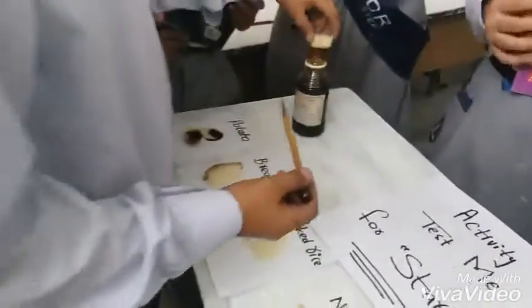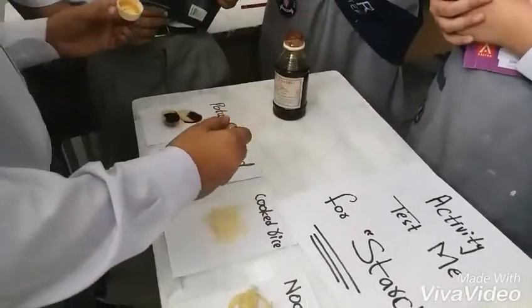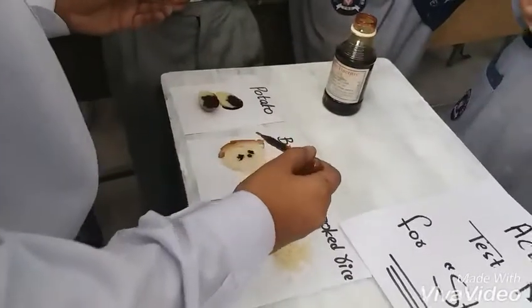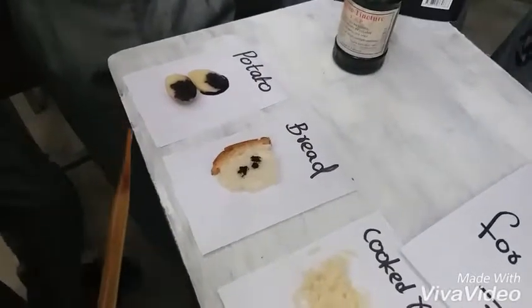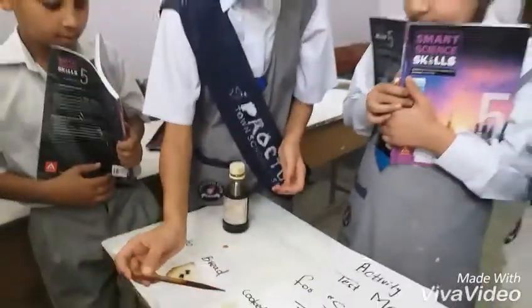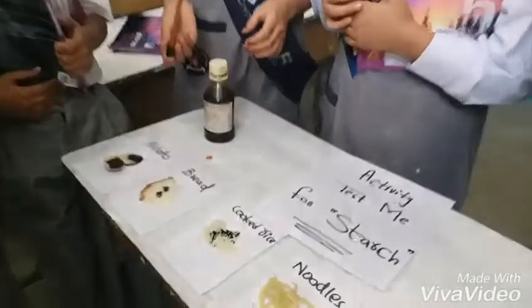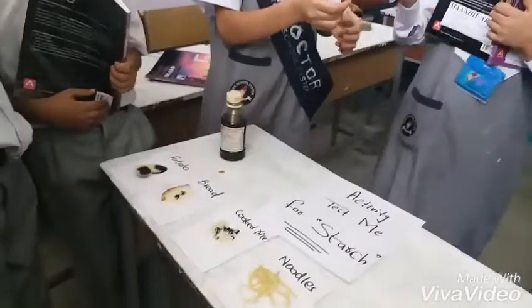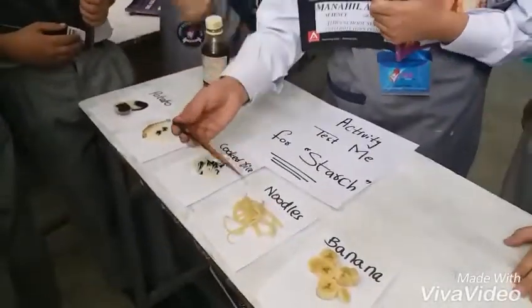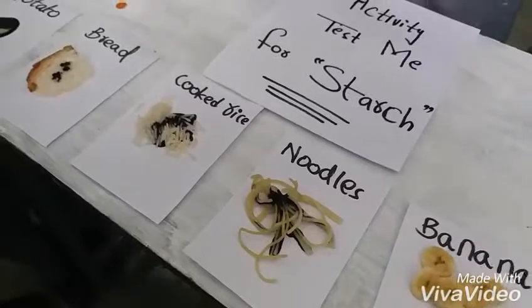Okay, now Ali. Take this iodine solution. Tell me the color. Dark blue. Alright, so is there any starch in this food item? Yes, there it is. Which food item is this? Rice. Tell me the color. Dark blue. Alright. Next, for noodles — dark blue. It's again turned into dark blue.